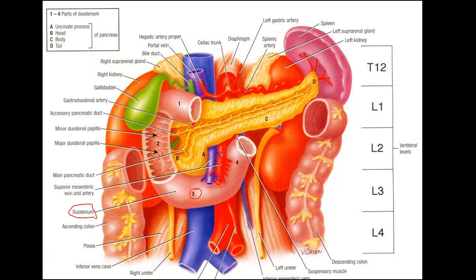As you see in this picture, we have the duodenum. The duodenum is divided into 4 parts: the first part, which is the superior one; the second part, which is the inferior one; the third part, which is the transverse one; and the fourth part, which is the ascending one. The first part is superior to the pancreatic head, the second part is to the right of the head, the third part is inferior, and the fourth part is to the left — and inferior to the body.